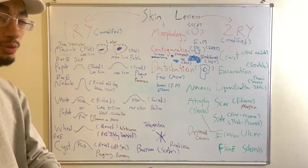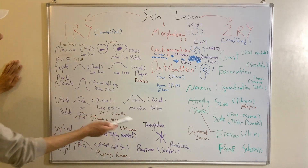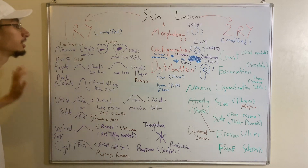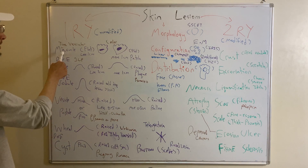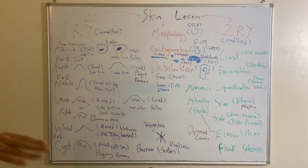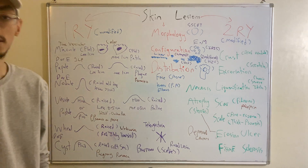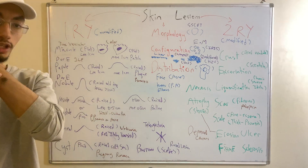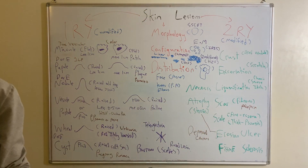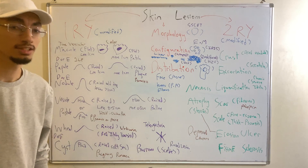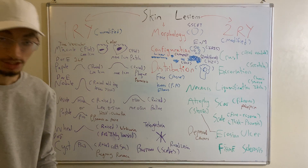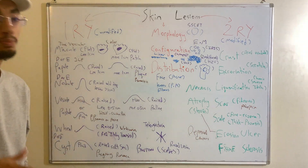Now let's cover the primary skin lesions. Thinking about morphology, we classify them as flat, raised, or depressed. Starting with flat lesions: a macule is a flat lesion less than one centimeter with a change in color. For example, the macule on my skin is brown — hyperpigmented compared to surrounding areas — and I've had it my entire life. It is a flat primary skin lesion less than one centimeter with a color change.